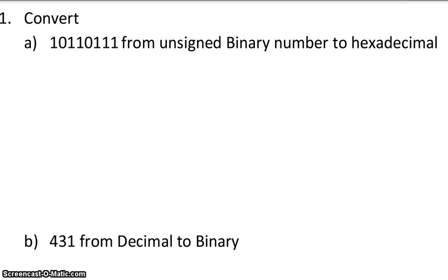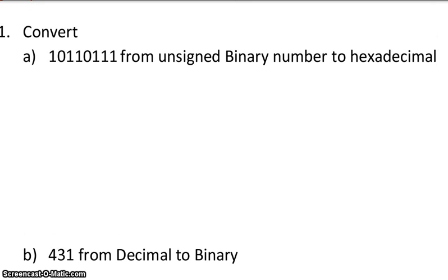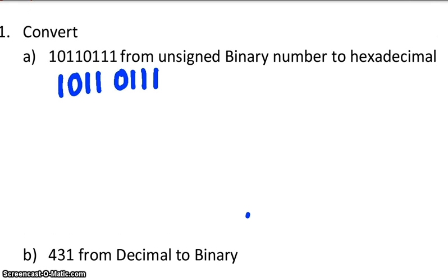So what we do is, for the binary number that needs to be converted — I have 1, 0, 1, 1, 0, 1, 1, 1 — start out from the least significant bit. From there, create a group of 4. Do the same thing until you run out of bits.